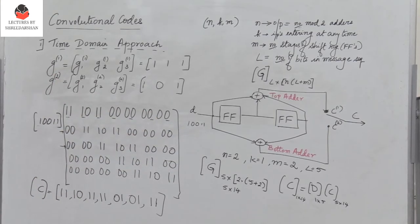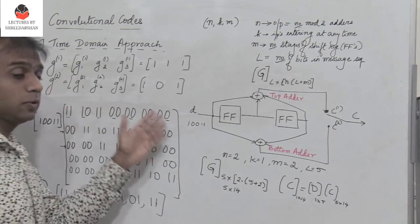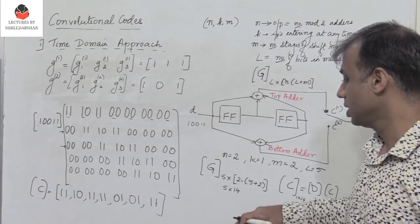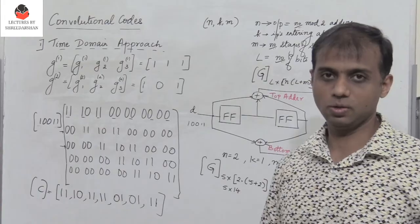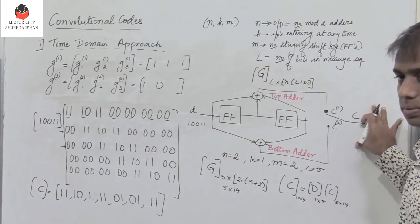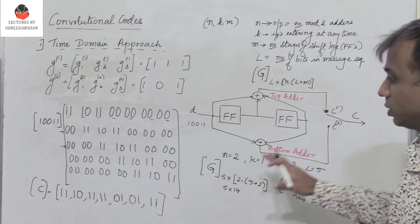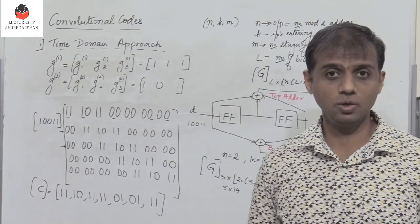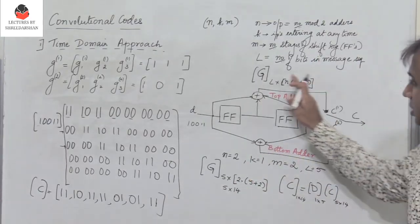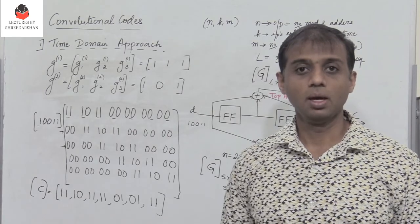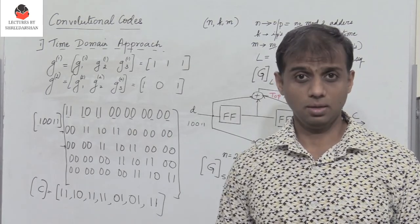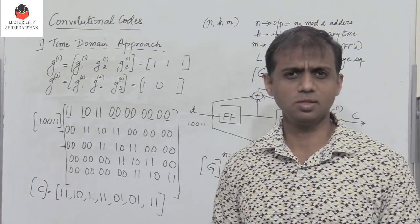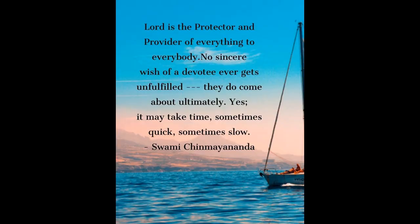This is how we find the output of a convolutional encoder using the time domain approach. In the next video segment, we will solve the same problem using the transform domain approach and verify that we get the same output. To view all other videos in information theory and error control coding, click on the icon or go through the playlist. Don't forget to like, share, and subscribe.